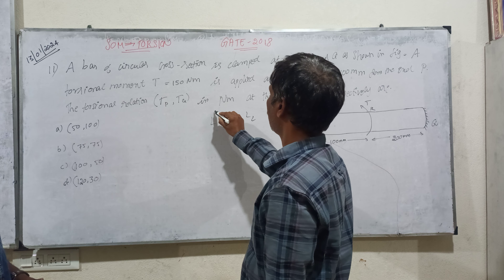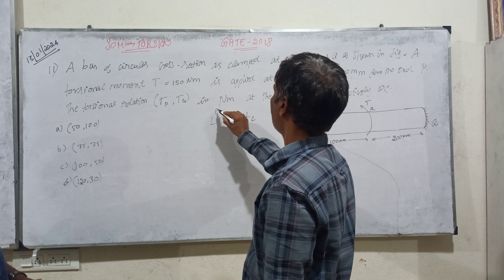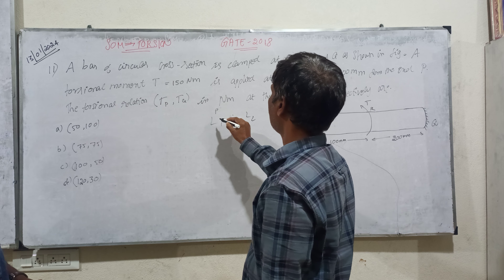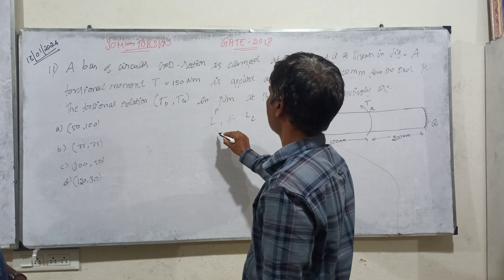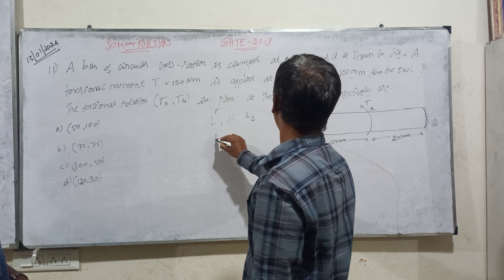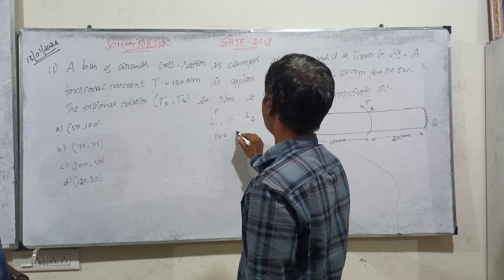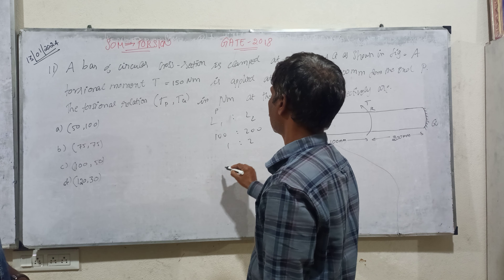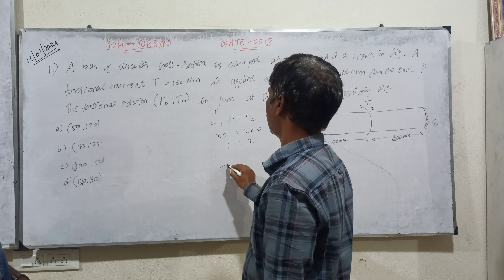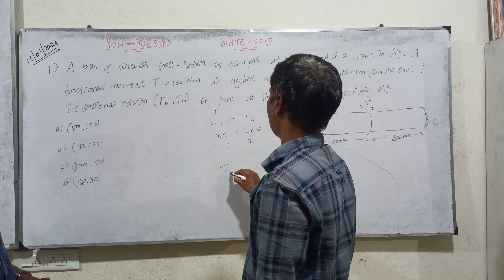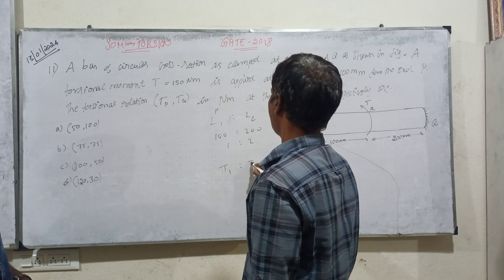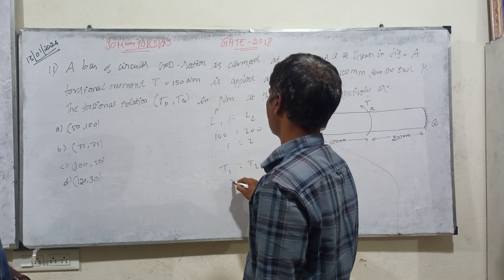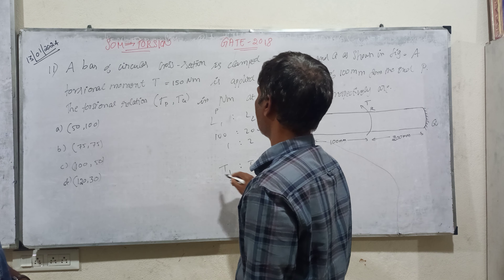So, PR and the L1 to L2 ratio is set. Then the 1 to 2 ratio gives T1 and T2 ratio as 2 is to 1.